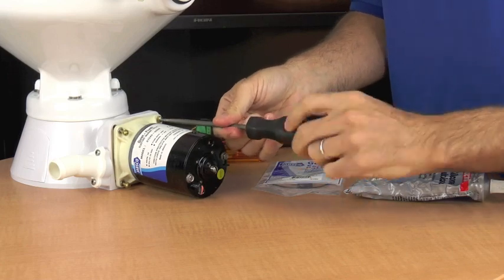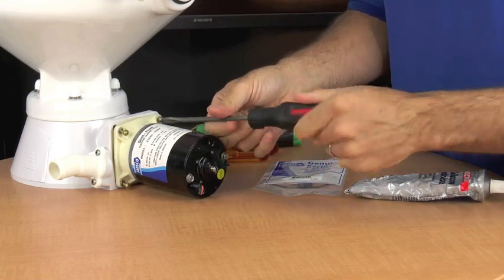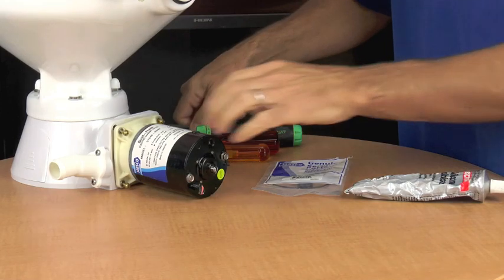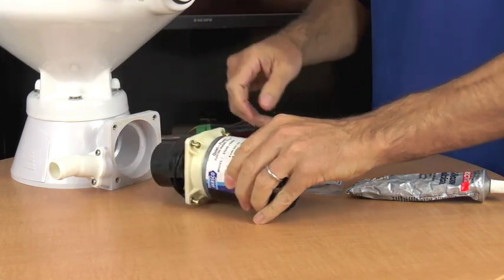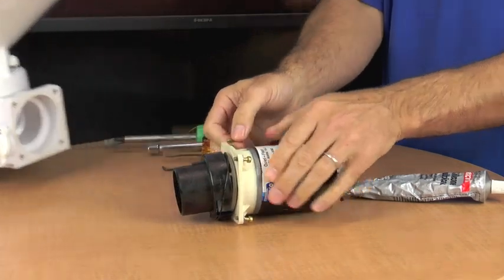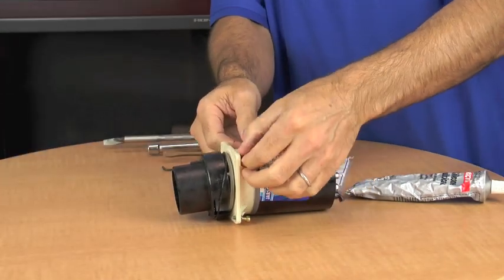The cover comes off and we've got our four screws. Remember to have some rags handy because you probably will get some water coming out when this assembly comes off. Okay, it should pull straight out. And there we have it. We've got the four screws. Thank you Mike.